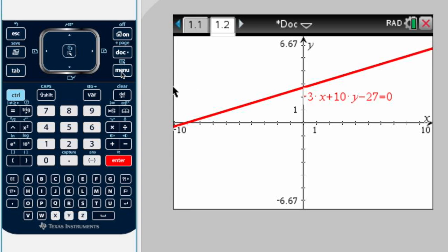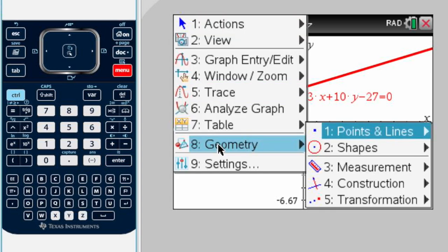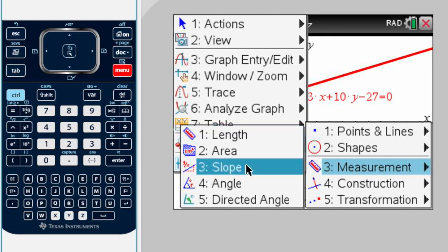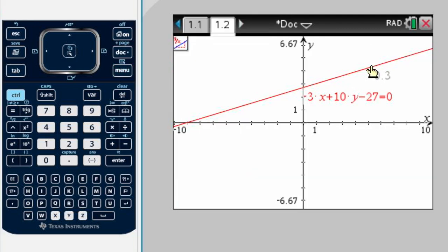And again, we do menu, geometry, measurement, slope, then double-click. This is my slope. Thank you.